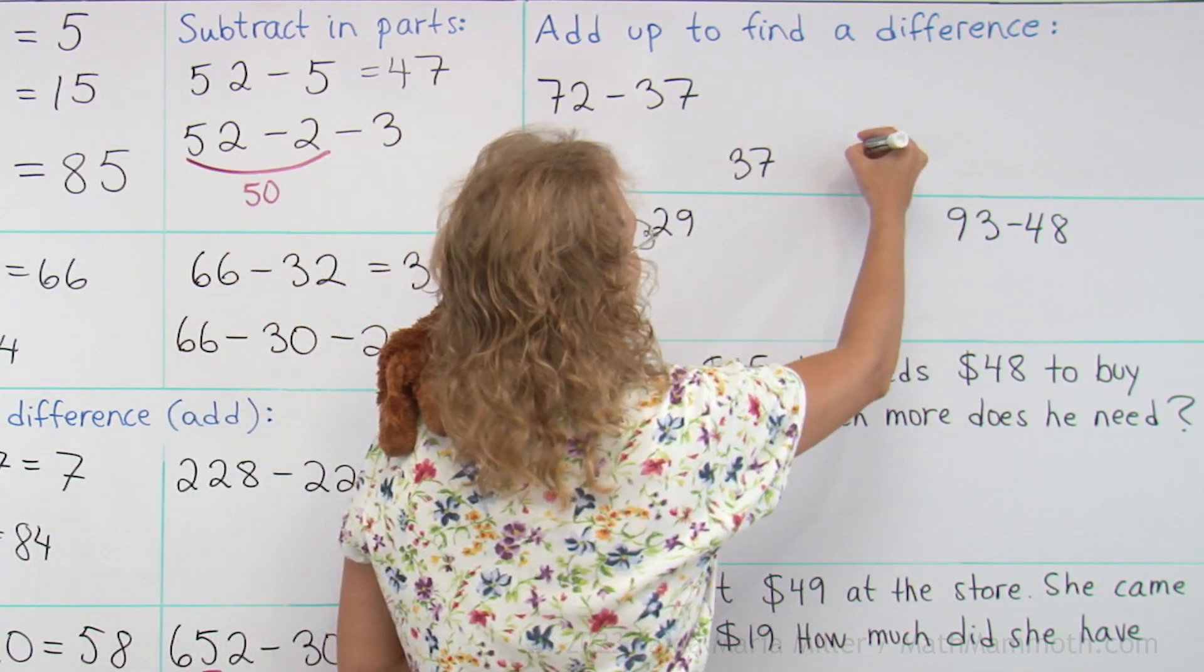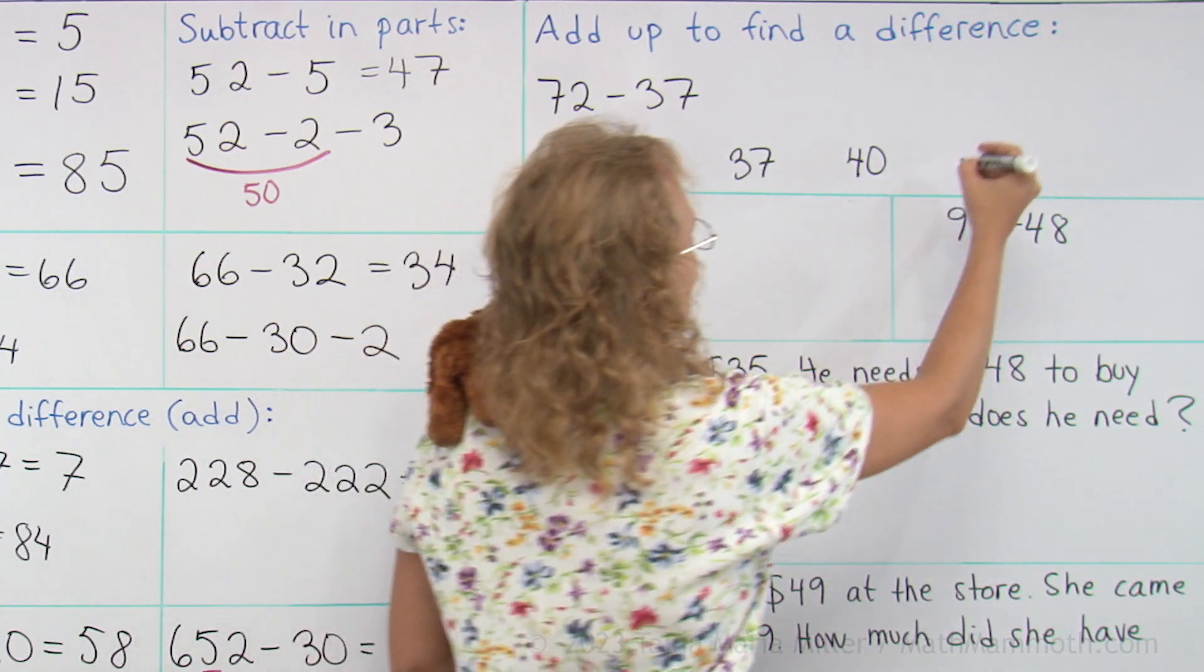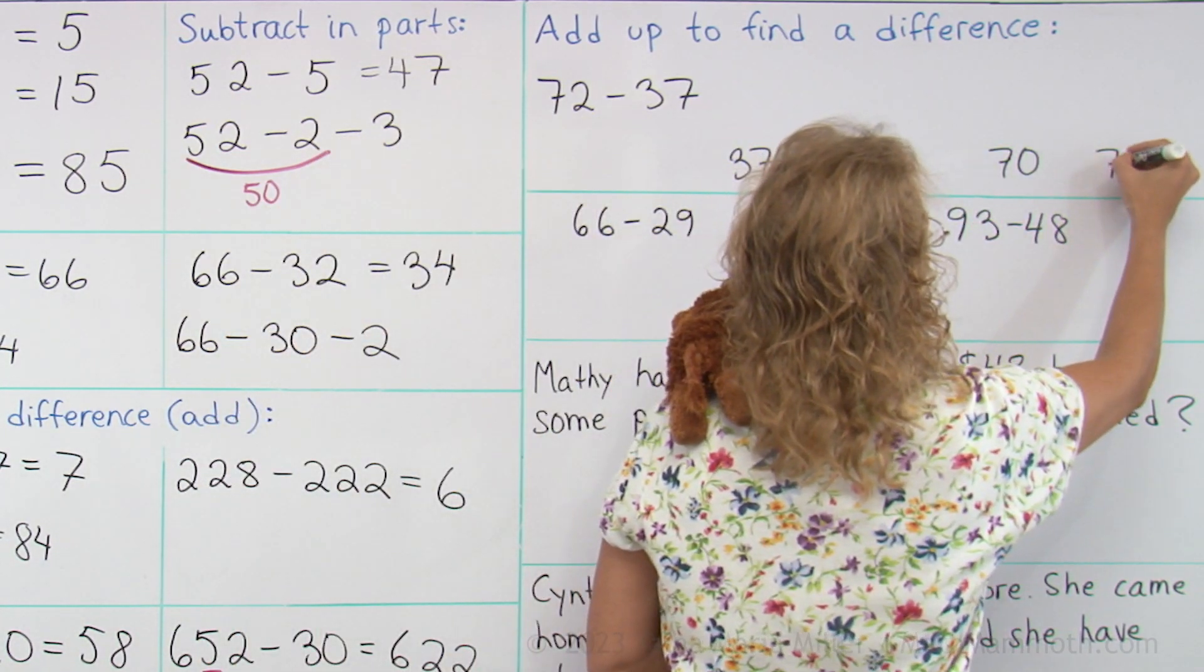And I'm going to make jumps. First, I'm going to jump to the next whole 10, which is 40. Then I'm going to jump to the whole 10 that is here. And then lastly to 72.